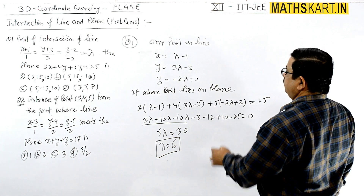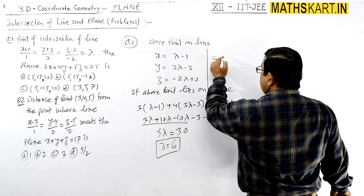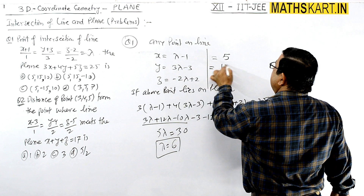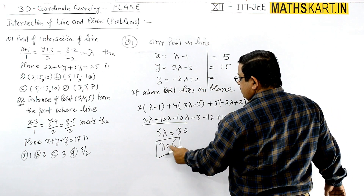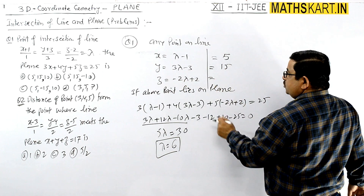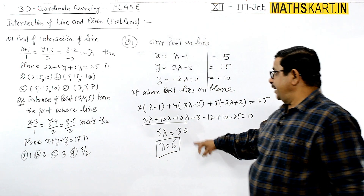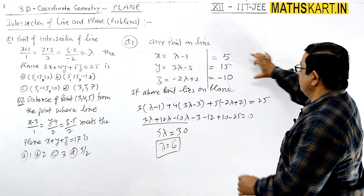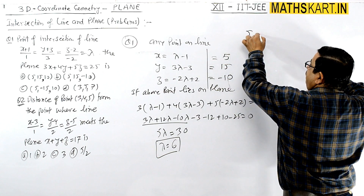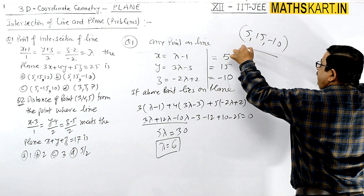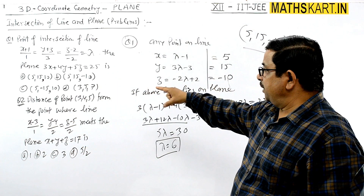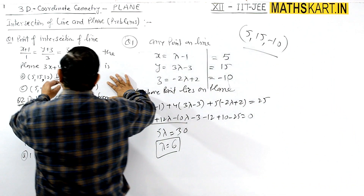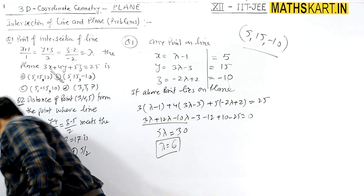Putting λ = 6: x = 6 - 1 = 5, y = 3(6) - 3 = 15, z = -2(6) + 2 = -10. Therefore the point of intersection is (5, 15, -10). Option B is correct.